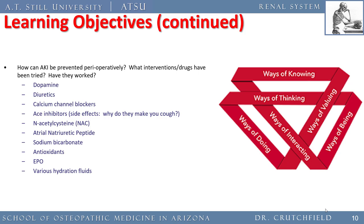How can acute kidney injury be prevented perioperatively? The best approach is not letting the patient become hypotensive — any mean arterial pressure below 55 for even one minute can cause acute kidney injury. Drugs we've tried include dopamine, diuretics, calcium channel blockers, ACE inhibitors, N-acetylcysteine, atrial natriuretic peptide, sodium bicarb, antioxidants, EPO, normal saline, lactated Ringer's, and HESPAN. None of them work.